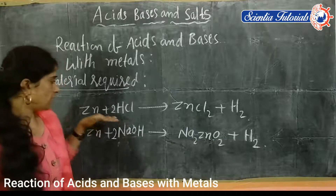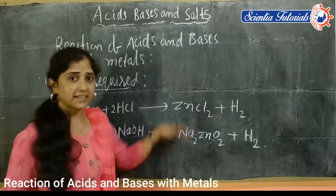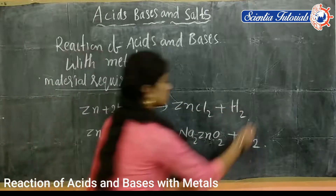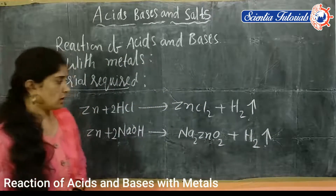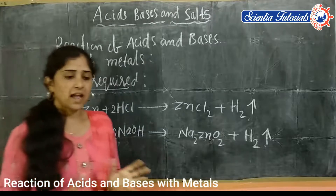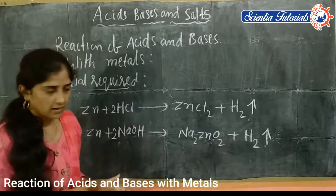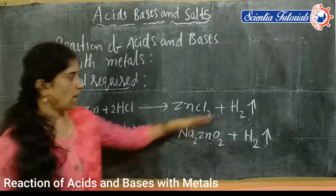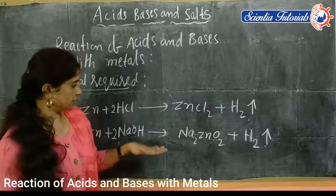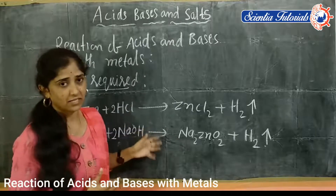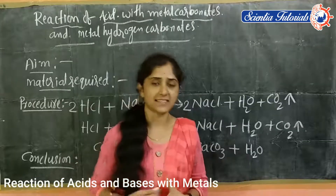We can observe that when acid reacts with metal, or base reacts with metal, it forms the related salt and hydrogen gas. Hydrogen gas is liberated. I hope you understand this session. You should write the equation of this activity and observe the procedure. Now, reaction of acids with metal carbonates.